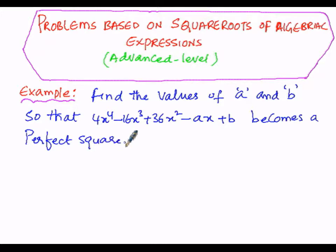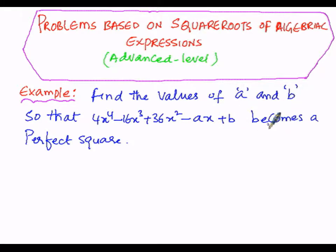In this problem we are going to find out the values of a and b of the given algebraic expression of 4th degree: 4x⁴ minus 16x³ plus 36x² minus ax plus b, where a and b are unknown. When this expression becomes a perfect square, we need to find the values of a and b.